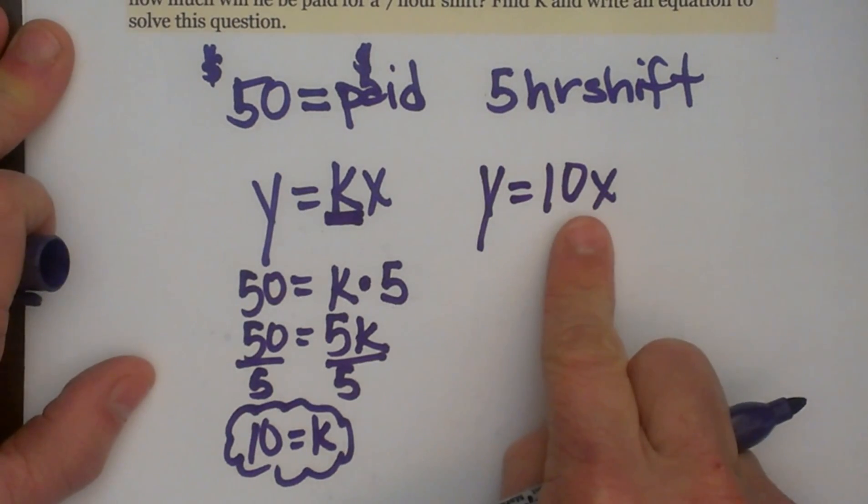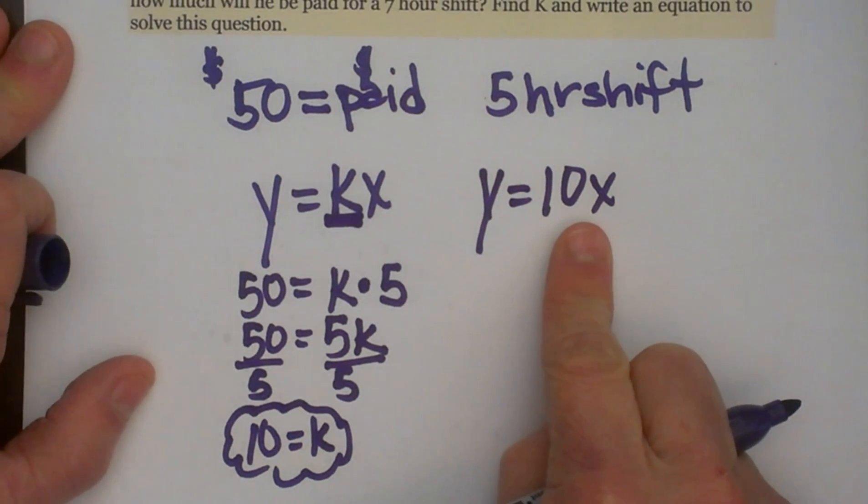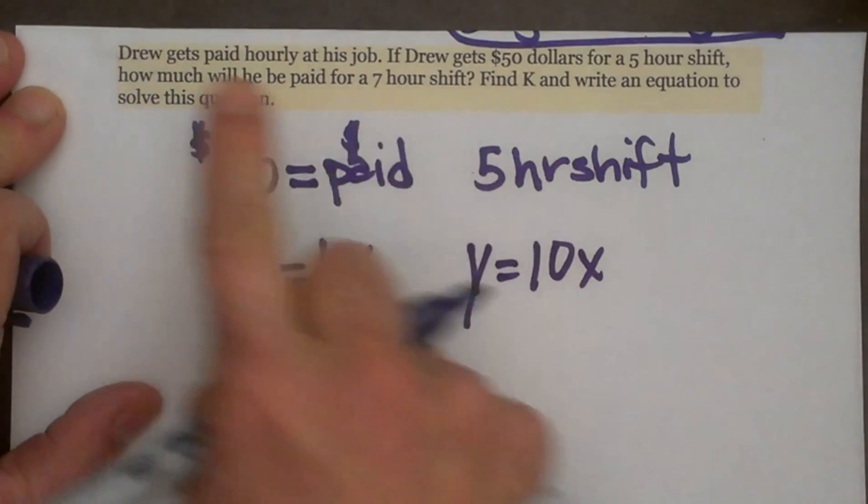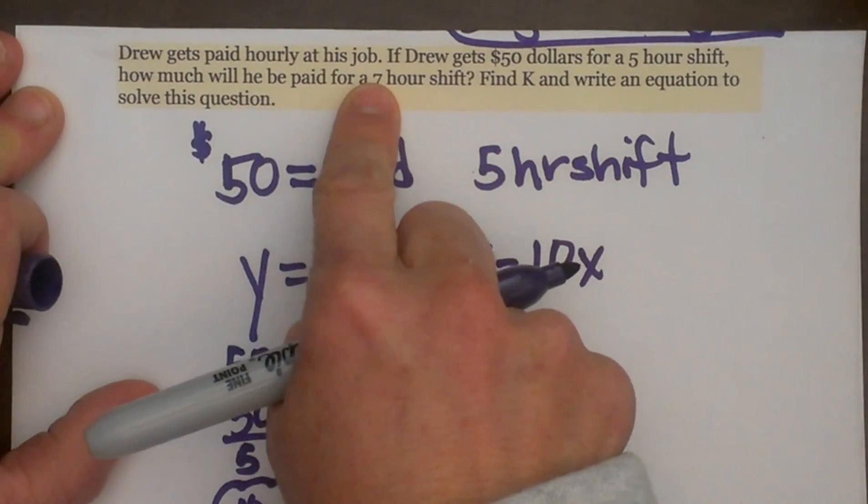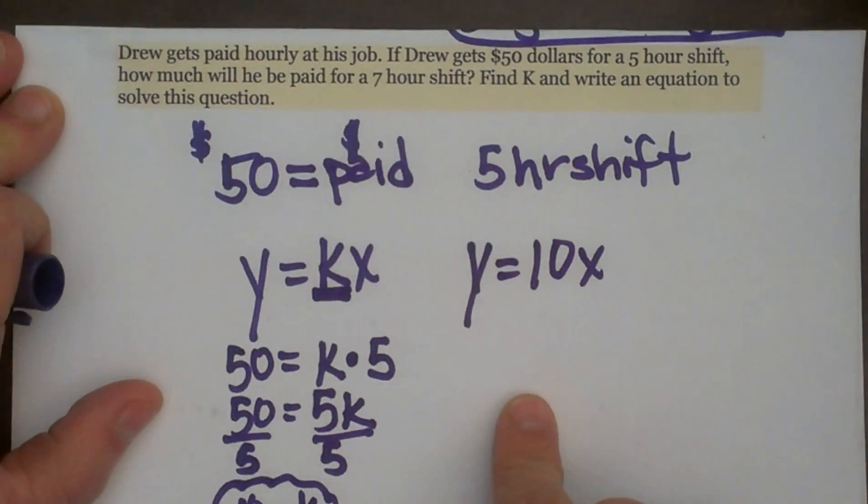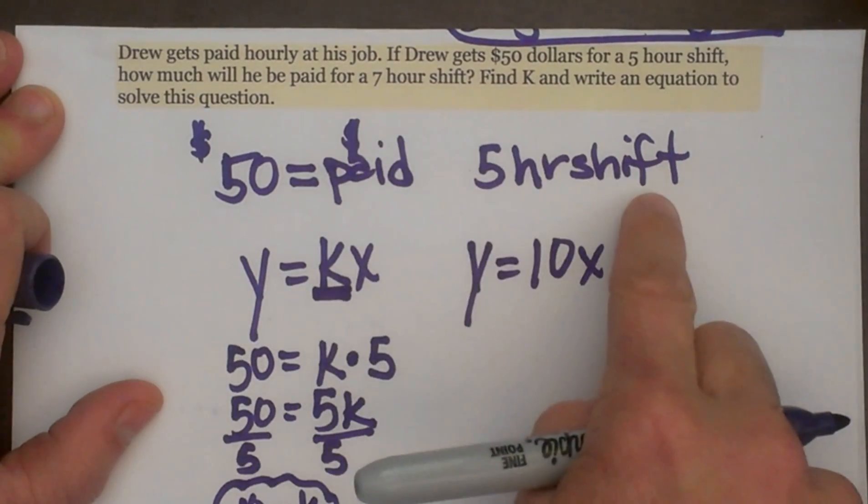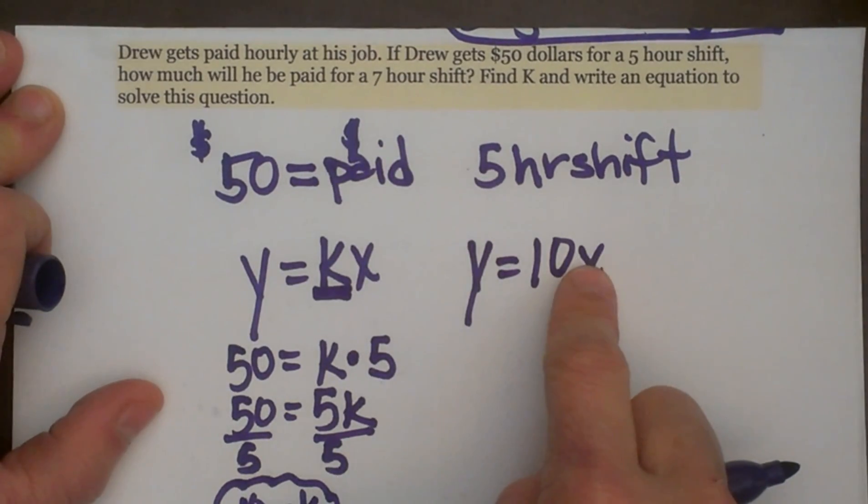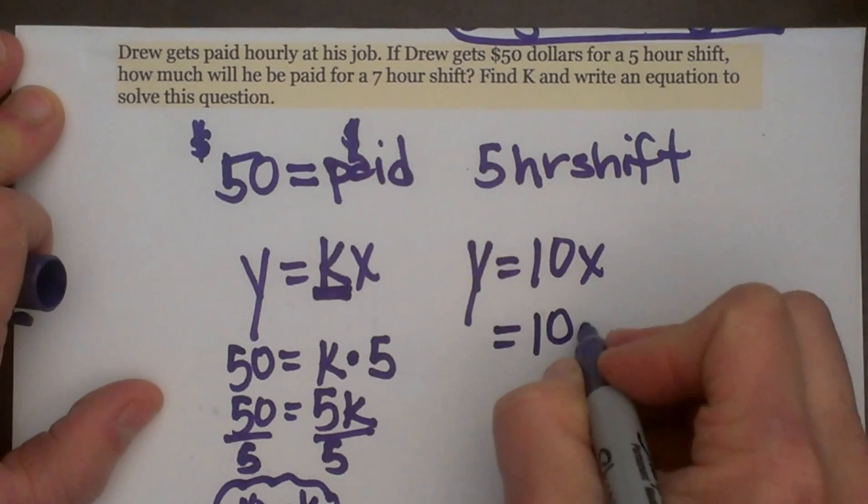Now we can use this equation to solve any number of hours that he works. But the question is asking us, how much will he be paid for 7 hours, for a 7 hour shift? So again, hour shift, that is our independent variable, so we're going to plug it in for X.